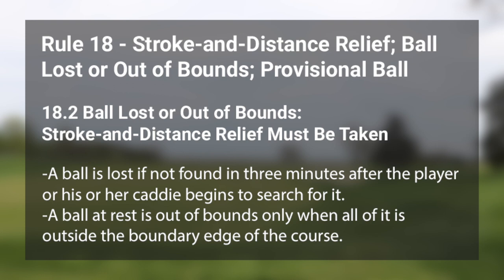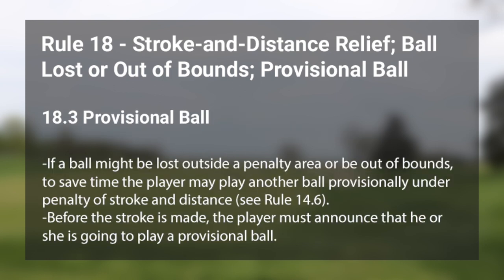For example, if you tee your golf ball up and hit it out of bounds, you must retee another one — it adds a stroke, and you would be hitting your third shot. Rule 18.3 covers the provisional ball. If you're not sure if your ball is going to be lost or out of bounds, you are allowed to hit a provisional. There's a lot to cover about provisional golf balls, such as when a provisional ball is allowed, announcing play of a provisional ball, playing it, and when it becomes the ball in play or is abandoned.